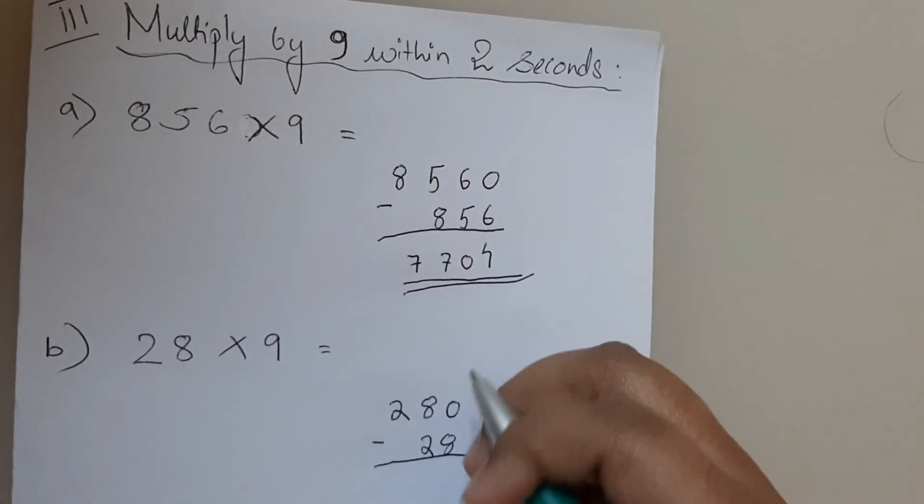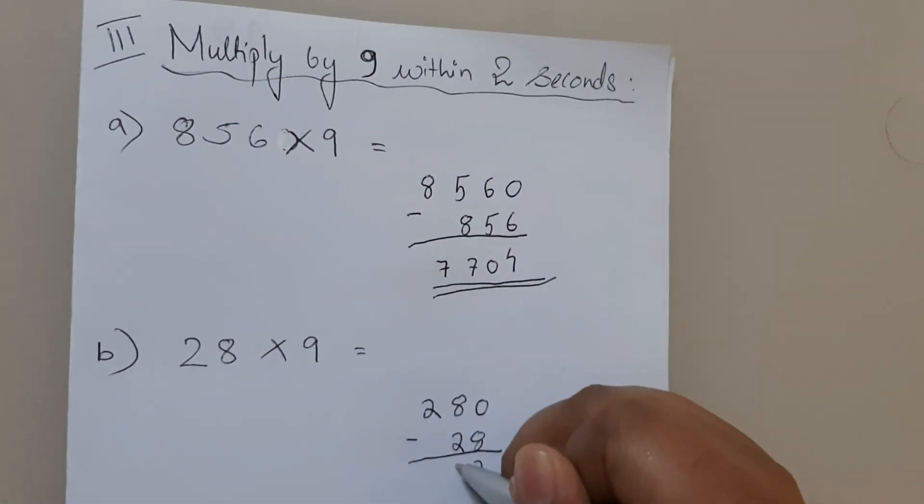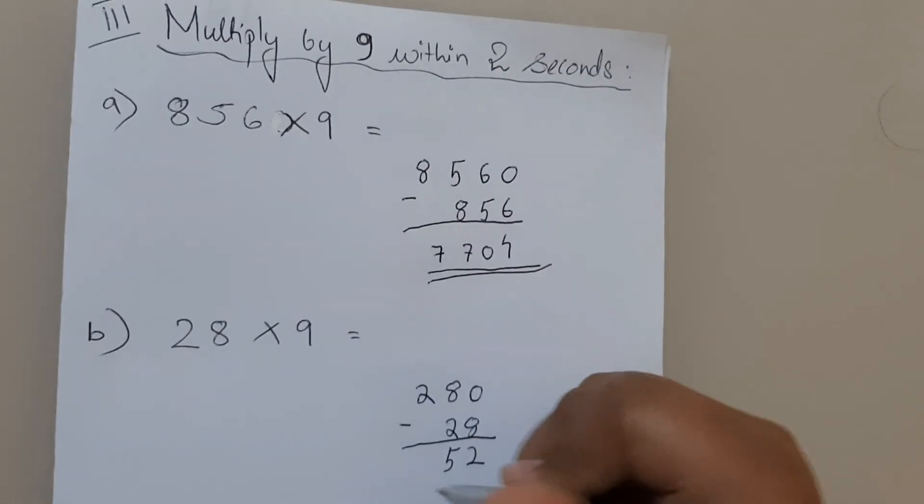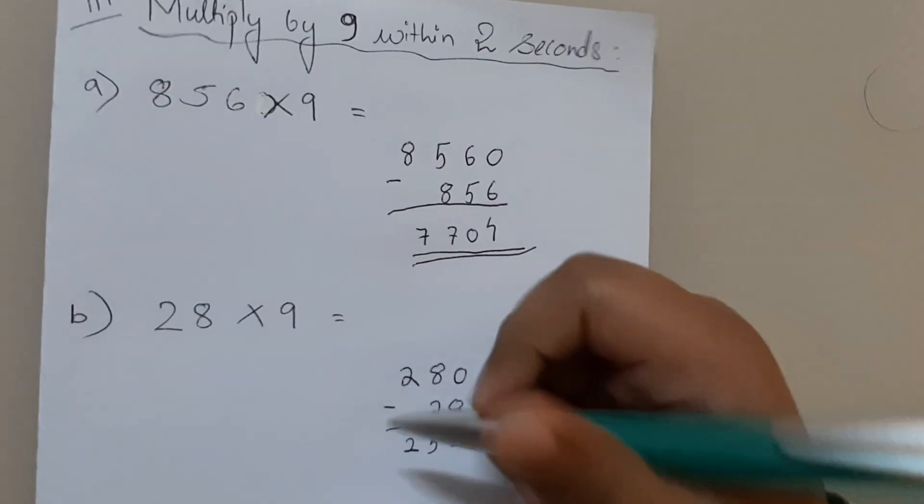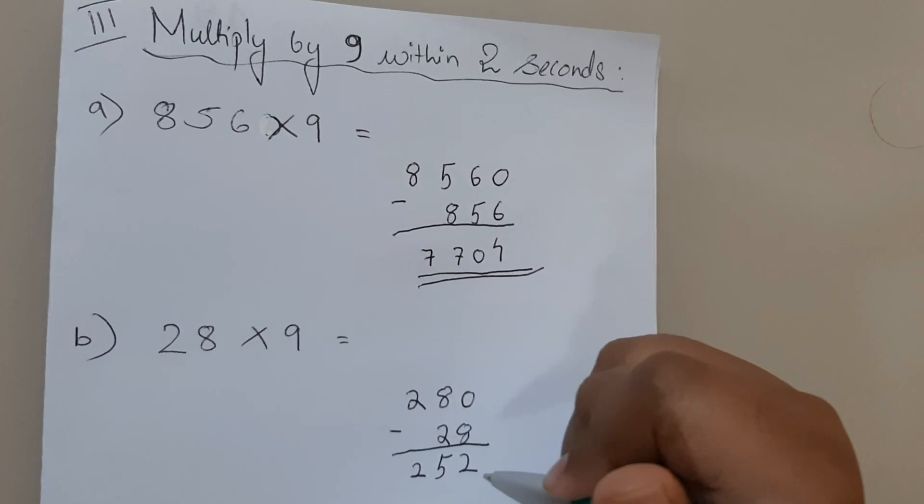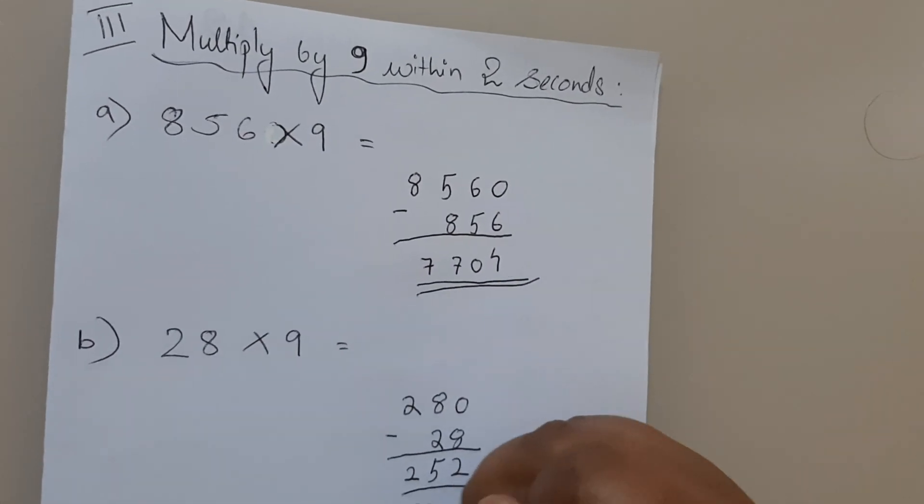This one is 2, this one is 5, and this one is 2. So the answer for 28×9 is 252.